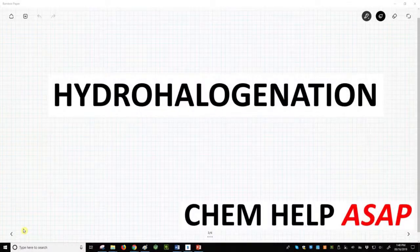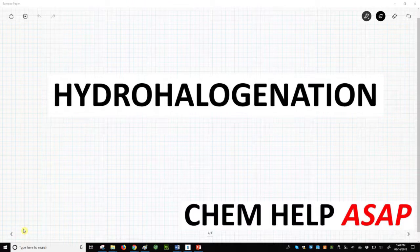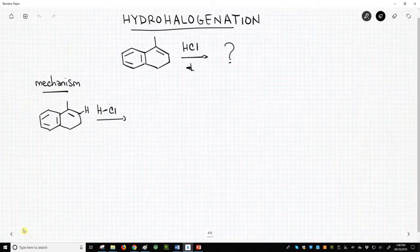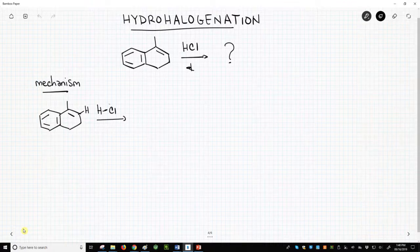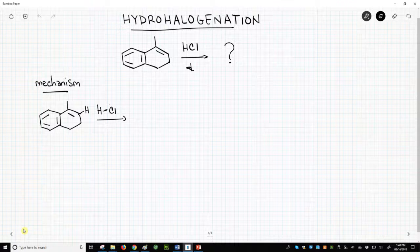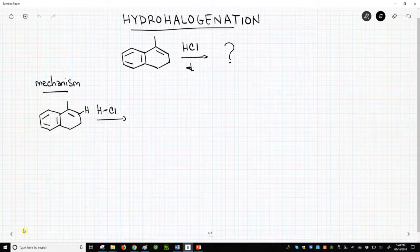Good day from Chem Help ASAP. Let's do a sample hydrohalogenation problem. Here's our problem: we have an alkene reacting with HCl. Notice the reagents - we just have HCl. There is no water or solvent listed, so you should not assume those are in the reaction. Only use what you are given in the question.